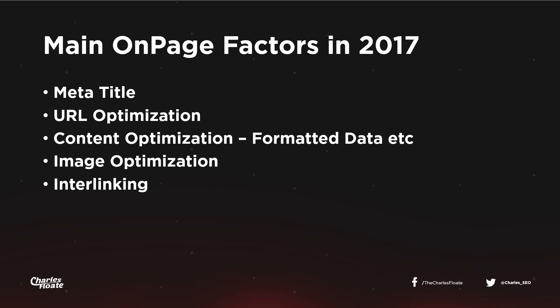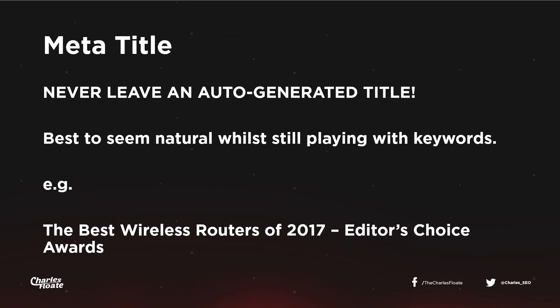Starting with the meta title — this is the title of your page that you'll see in the browser. Never leave your title auto-generated. You can't just install Yoast on your WordPress installation and expect it to automatically fill in an SEO-optimized title. First, you need to do your keyword research to know what to build your meta title around, and then make it sound natural while still incorporating your target keywords.